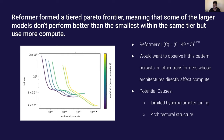Another interesting finding was that Reformer formed a tiered Pareto frontier, meaning that some of the larger models don't perform any better than the smallest within the same tier, but they do use more compute. So essentially these models would be needlessly more expensive when you could just use the smaller one. Reformer did have one of the best LFCs of the models I tested. I'd want to see how this pattern persists with other architectures — specifically to see if this is a pattern found with all transformers whose architecture directly impacts compute, such as the evolved transformer versus just Reformer.